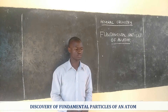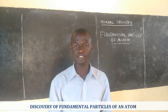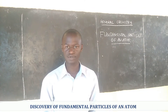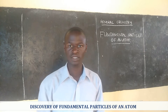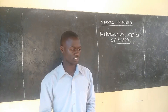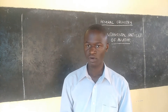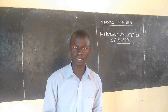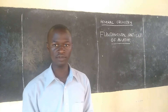Welcome back. Today we are going to continue with our topic of general chemistry and discuss the fundamental particles of an atom. As we discussed in the previous session about Dalton's atomic theory, we are going to discuss how the subatomic particles — electrons, protons, and neutrons — were discovered in the laboratory through different experiments conducted by different people.